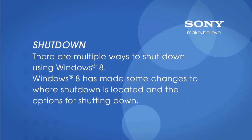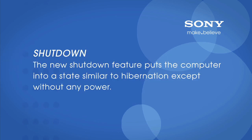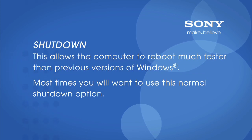There are multiple ways to shut down your computer using Windows 8. Windows 8 has made some changes to where shutdown is located and the options for shutting down. The new shutdown feature puts the computer into a state similar to hibernation, except without any power. This allows the computer to reboot much faster than previous versions of Windows.